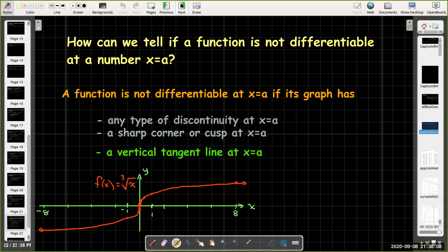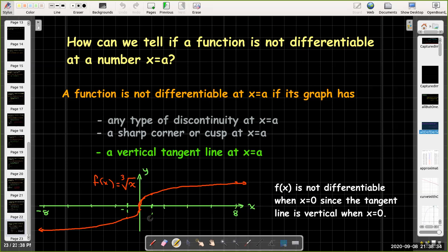And our last case, where the function may not be differentiable at a point, is if we have a vertical tangent line at that number. So here's a familiar graph. Here's the cube root function. And at x equals zero, there is actually a vertical tangent line. So at x equals zero, f(x) is not differentiable. And again, that makes sense. If your tangent line is vertical, recall that the slope of a vertical line is undefined. Well, I hope you found this short video on the properties of derivatives useful.